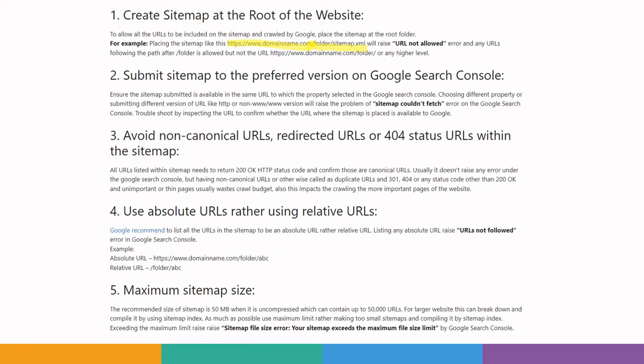Number two — check whether you have submitted the sitemap to the preferred version in Google Search Console. If your website prefers the non-WWW version as the preferred version, you need to submit the sitemap under that same non-WWW property. If you submit the sitemap under the WWW version instead, Google couldn't fetch the sitemap. This is a major cause of 'sitemap couldn't fetch' errors — check that you are submitting the sitemap under the right URL.